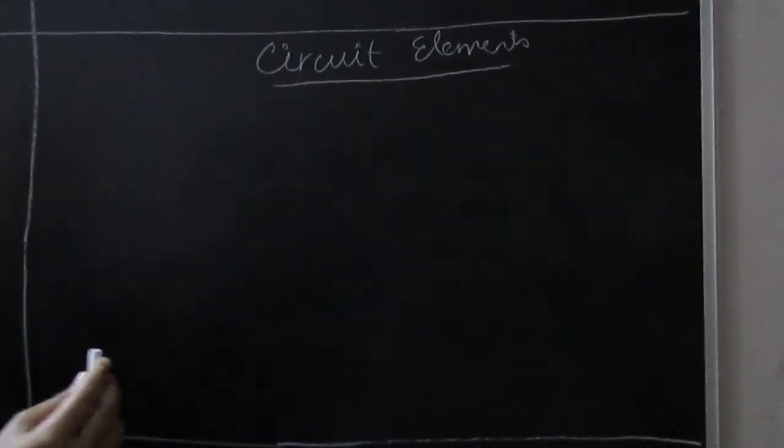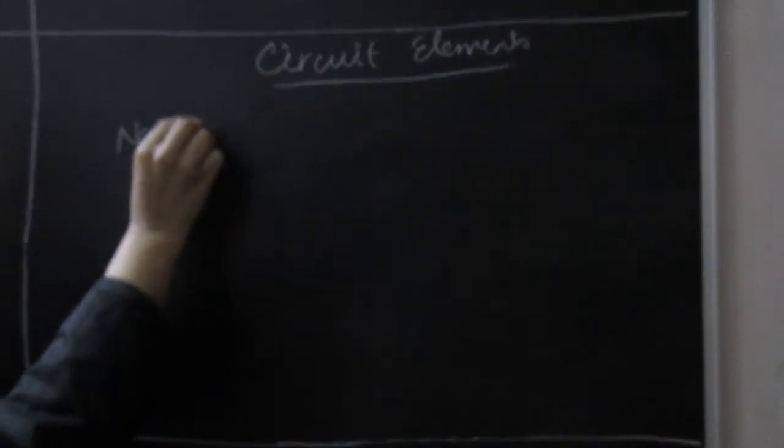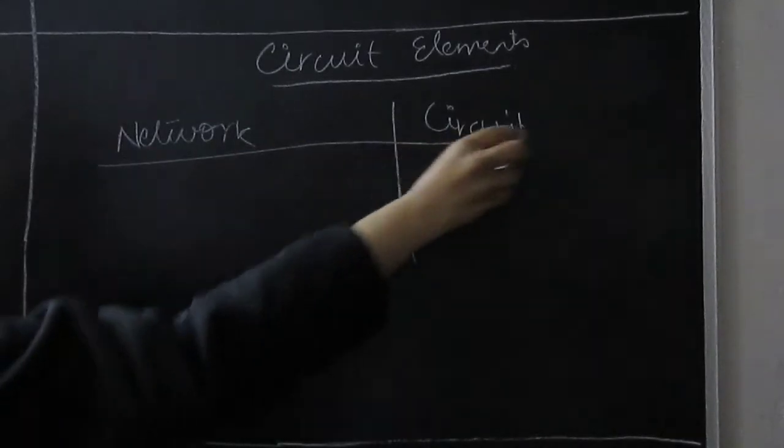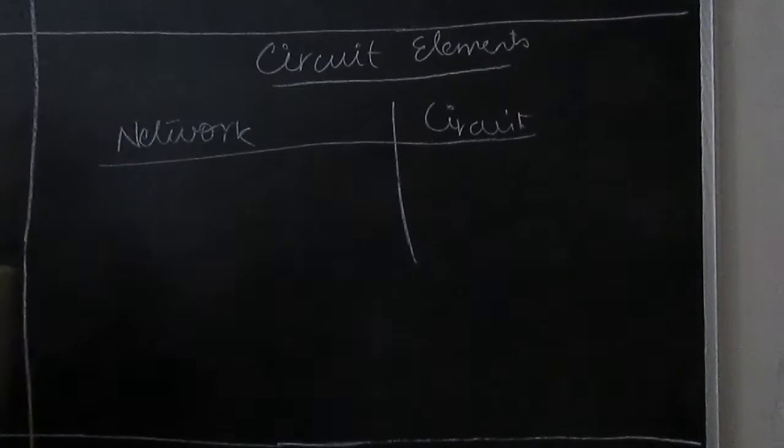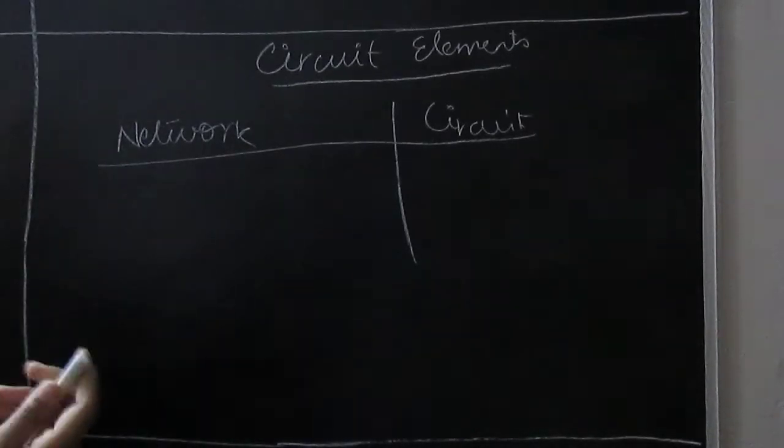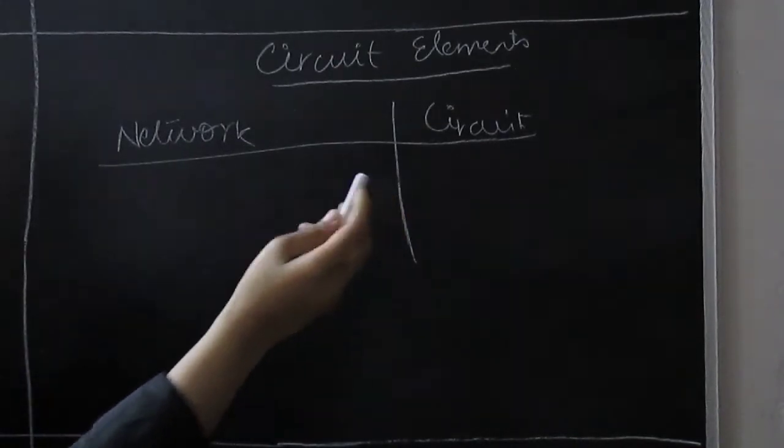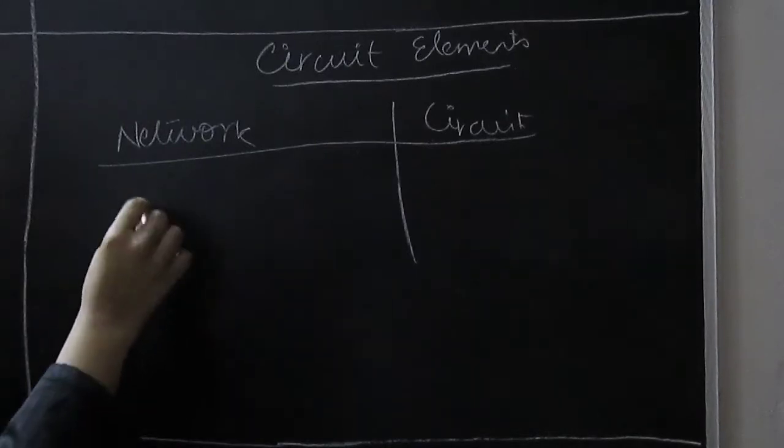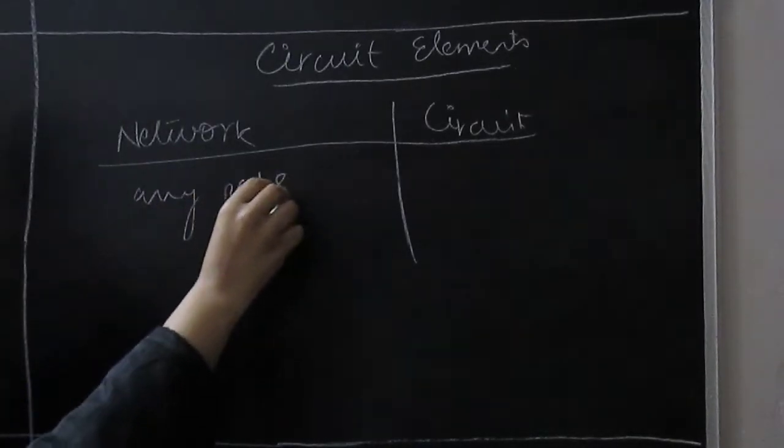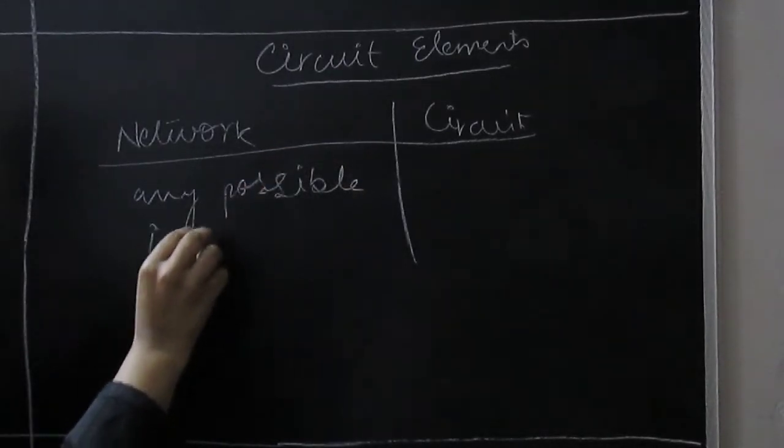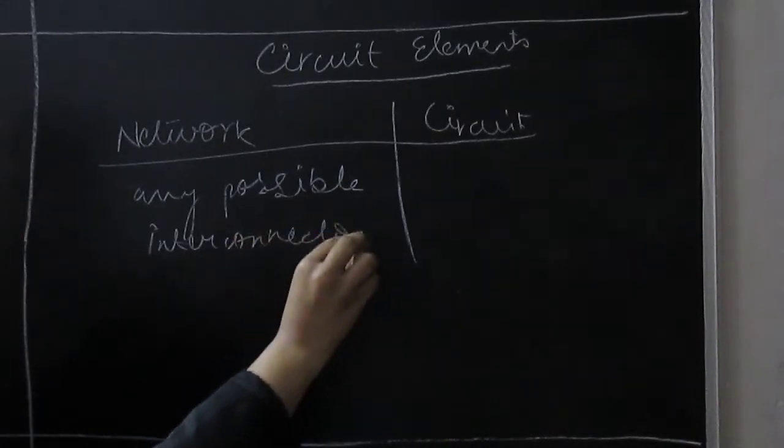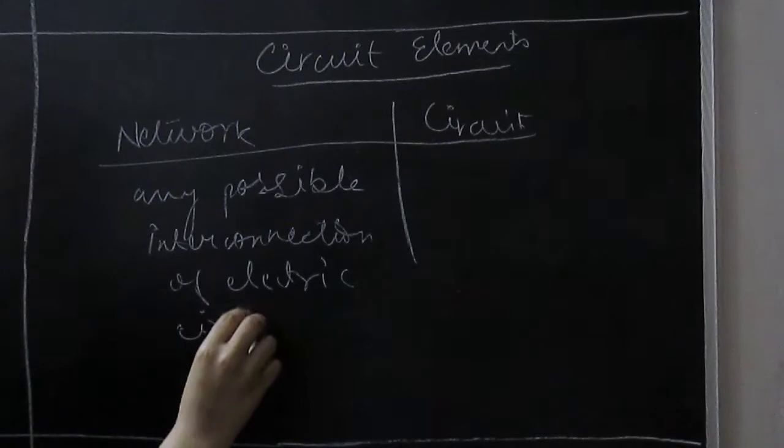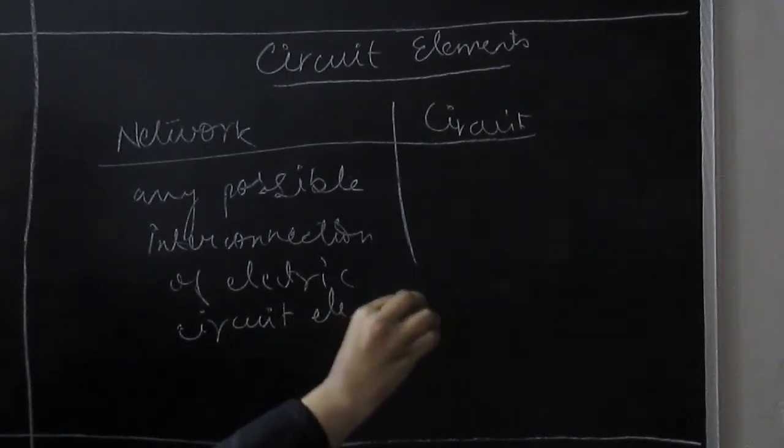The network can be any arrangement of circuit elements, meaning any possible interconnection of electric circuit elements. But the circuit will always be a closed network and energized.